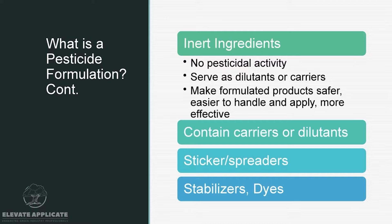Inert ingredients are those that have no pesticidal activity. They serve as dilutants or carriers, and they also make formulated products safer, easier to handle and apply, and more effective. Most pesticides contain carriers or dilutants. Some contain stickers and spreaders already in the formulation, and then some contain stabilizers and dyes.